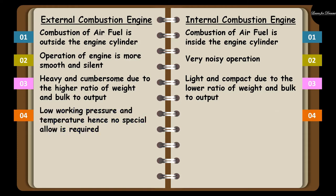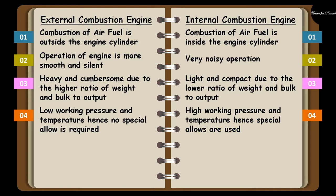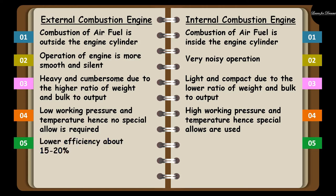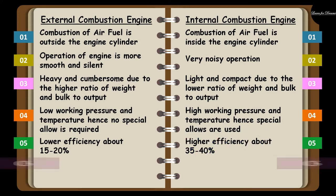The fourth difference between external and internal combustion engine: in external combustion engine, the working pressure is low and temperature is less, hence no special arrangement is required. But in case of internal combustion engine, the working pressure is high and the temperature is also high, so some special arrangement is required. The fifth difference is efficiency — the efficiency of external combustion engine is about 15 to 20 percent, but in case of internal combustion engine, the efficiency is 35 to 40 percent.